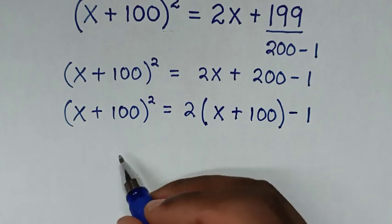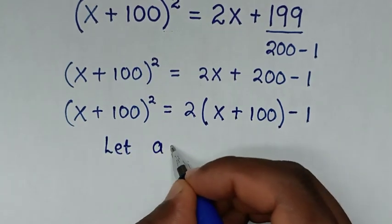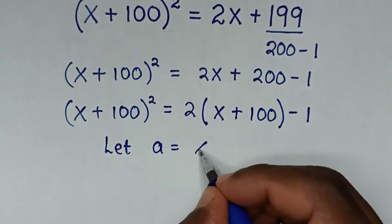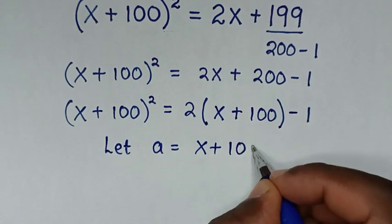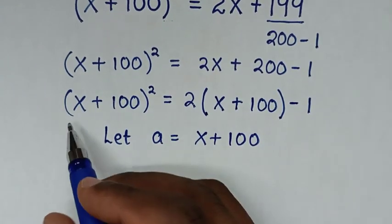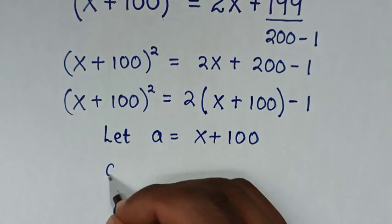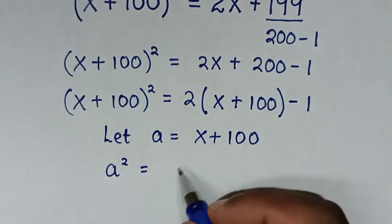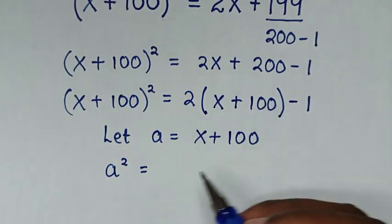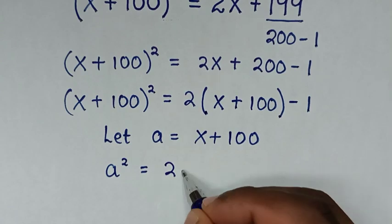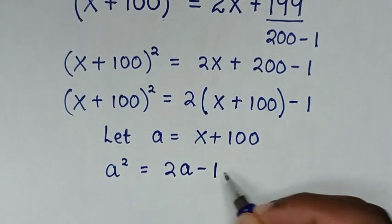In here, x + 100 is now common. So we let a = x + 100, then the equation becomes a² = 2a minus 1.